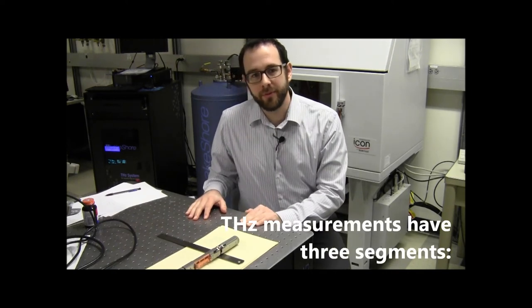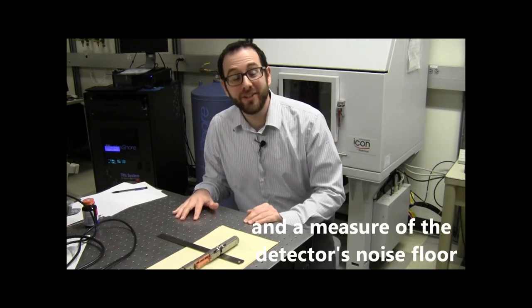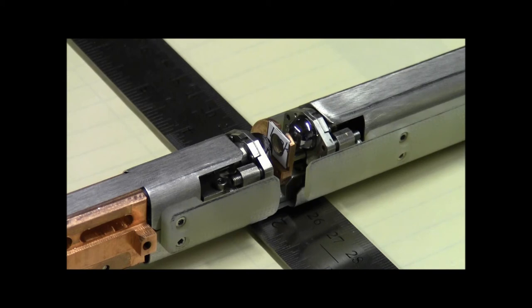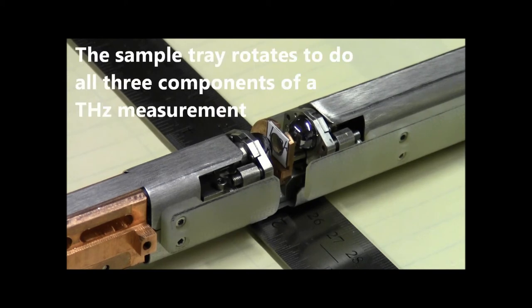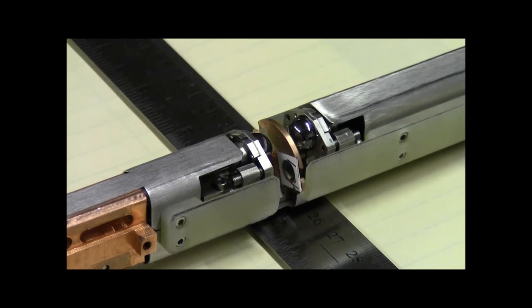Terahertz frequency transmission measurements consist of three segments: transmission through the sample, a reference measurement without the sample, and a measure of the detector's noise floor. What we've designed into our system is the ability to rotate the sample tray. You're able to take a sample measurement, rotate the tray, take a reference measurement without a sample between the emitter and detector, and then block the transmission between the emitter and detector to get a measure of the noise level of your detector.